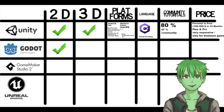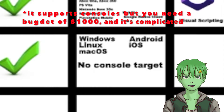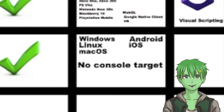So Godot supports both 2D and 3D, so you can make 2D or 3D games with Godot just like with Unity. It supports a lot of platforms, but there is no console target. However, Windows, Linux, MacOS, Android, and iOS — which are the standard platforms people make games for — are supported by Godot.